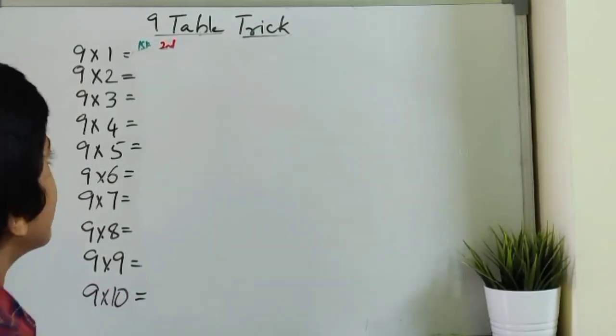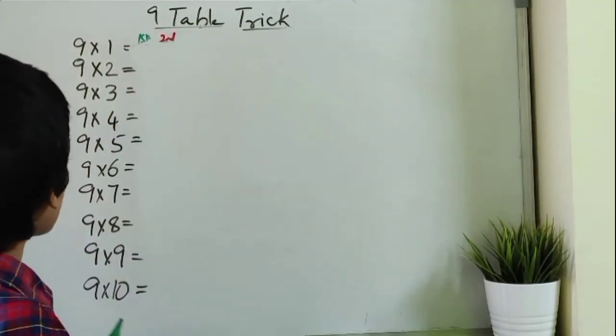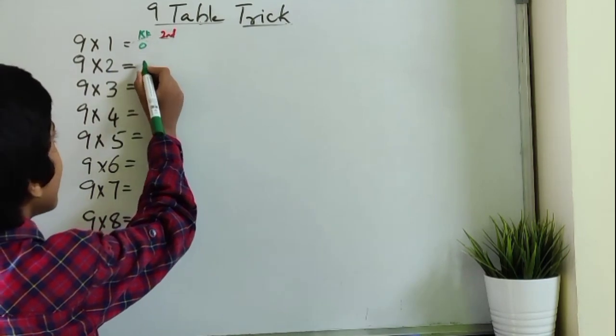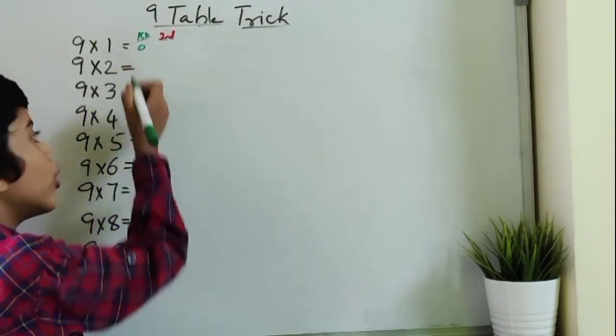Here is the 9 table. There are 2 columns. In the first column we write 0 to 9 from top to bottom.